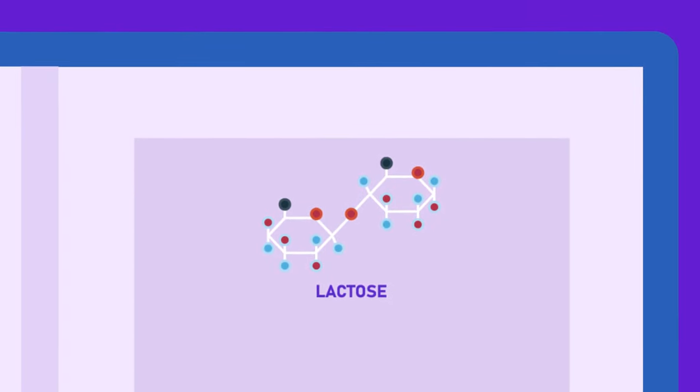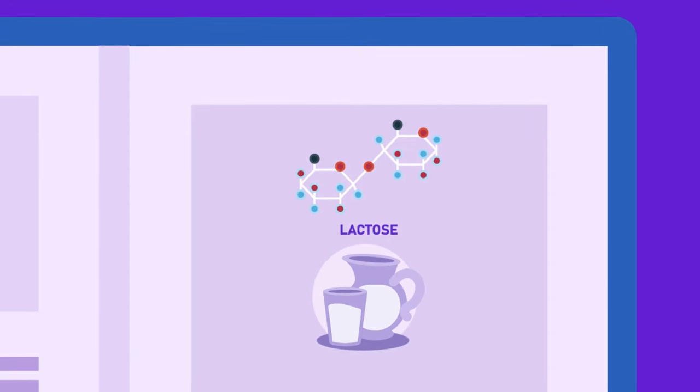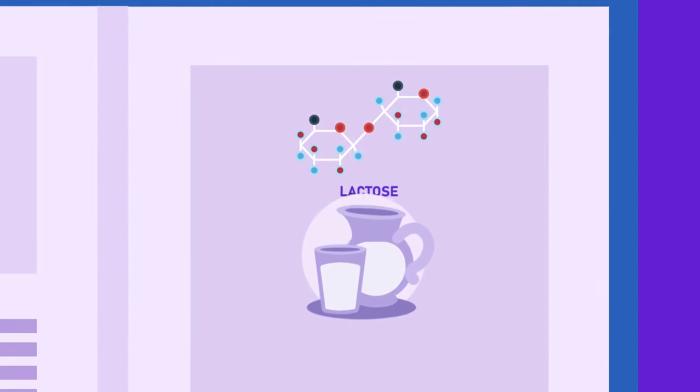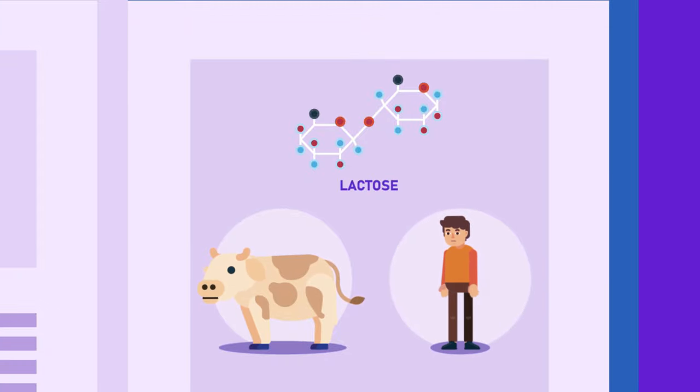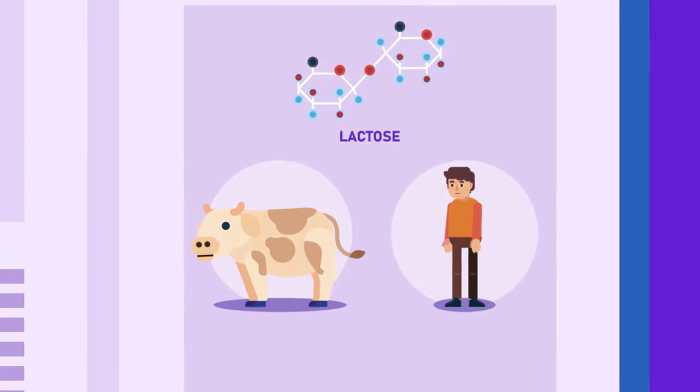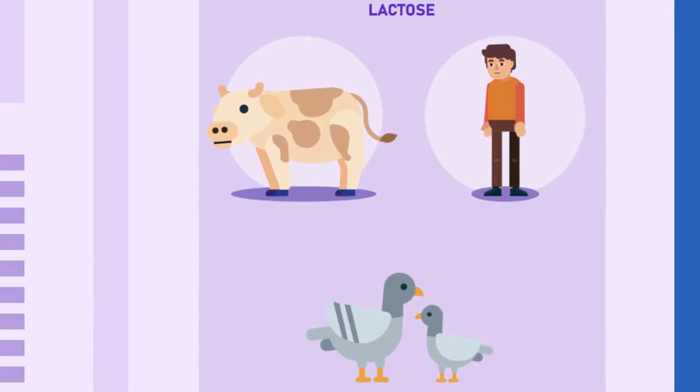Lactose, also known as milk sugar, is commonly found in milk, as the name suggests. It is found in milk of all mammals, including humans, and even in some similar fluids, such as pigeon's milk. It is formed from glucose and galactose combined together.